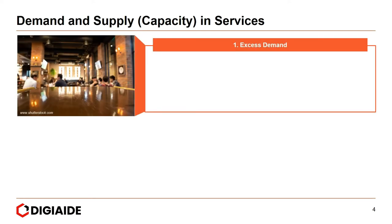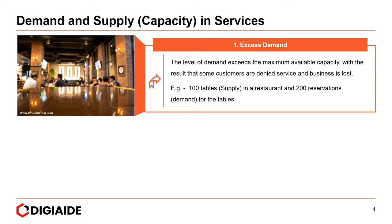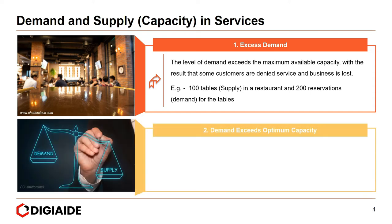First, excess demand — the level of demand exceeds the maximum available capacity, with the result that some customers are denied service and business is lost. For example, there are 100 tables in a restaurant — those 100 tables are the supply. And there are 200 reservations, which is the demand in this case. Clearly, 100 tables versus 200 reservations is a complete mismatch — excess demand.